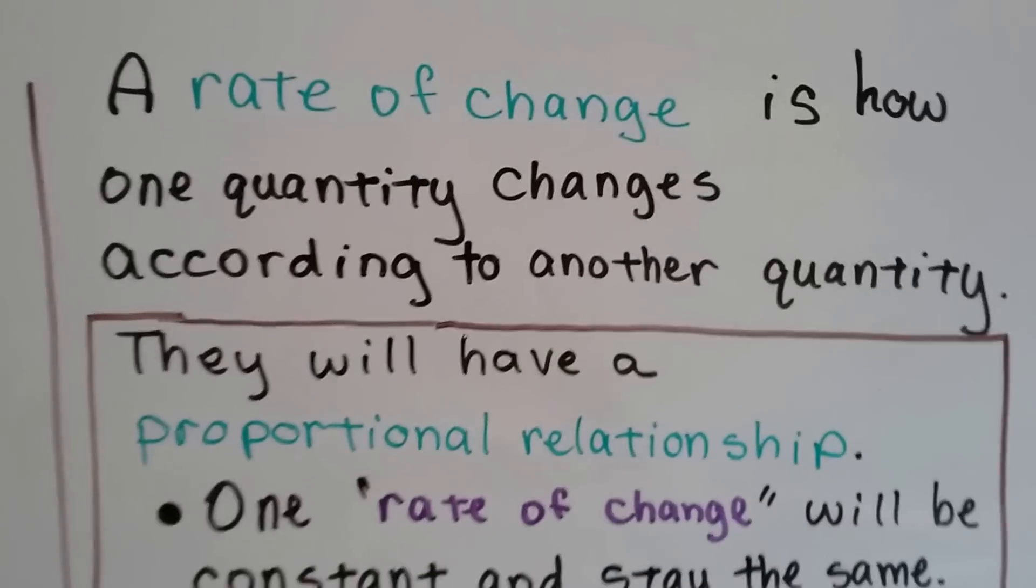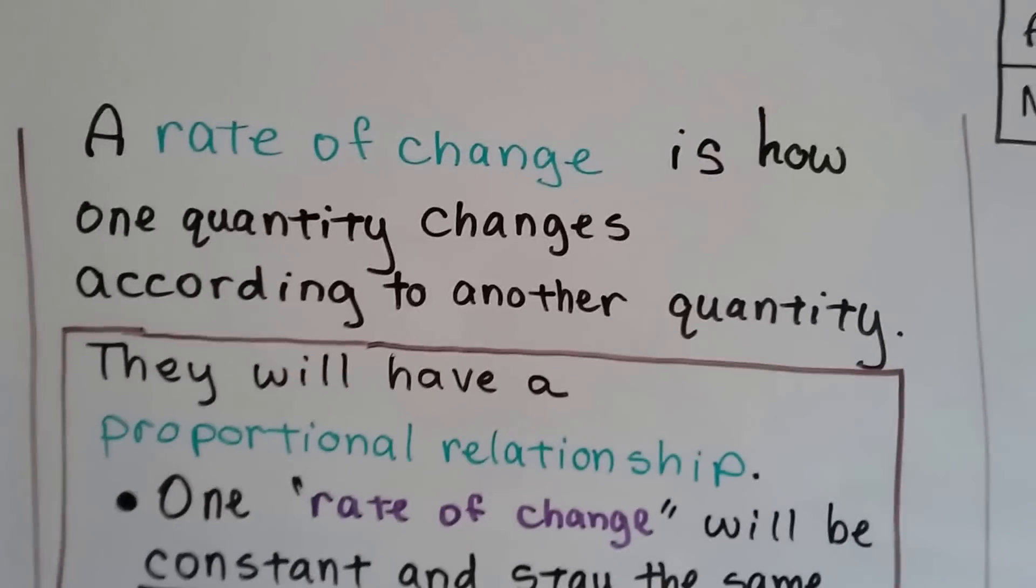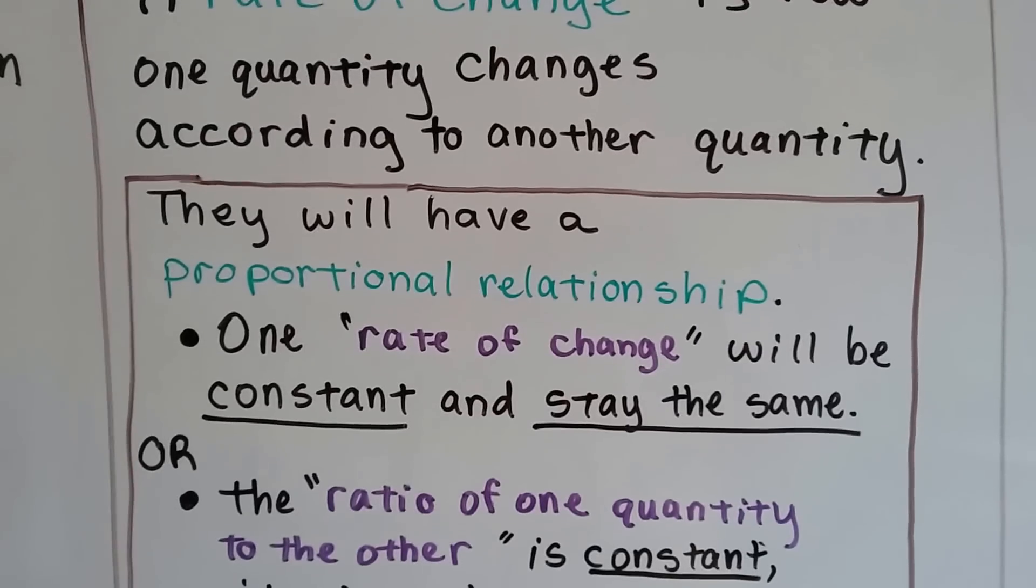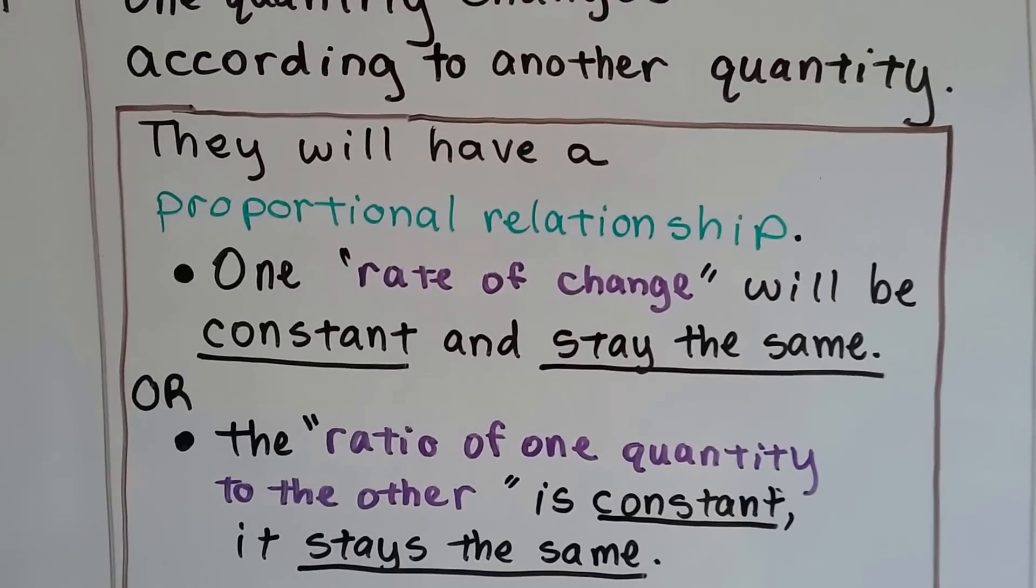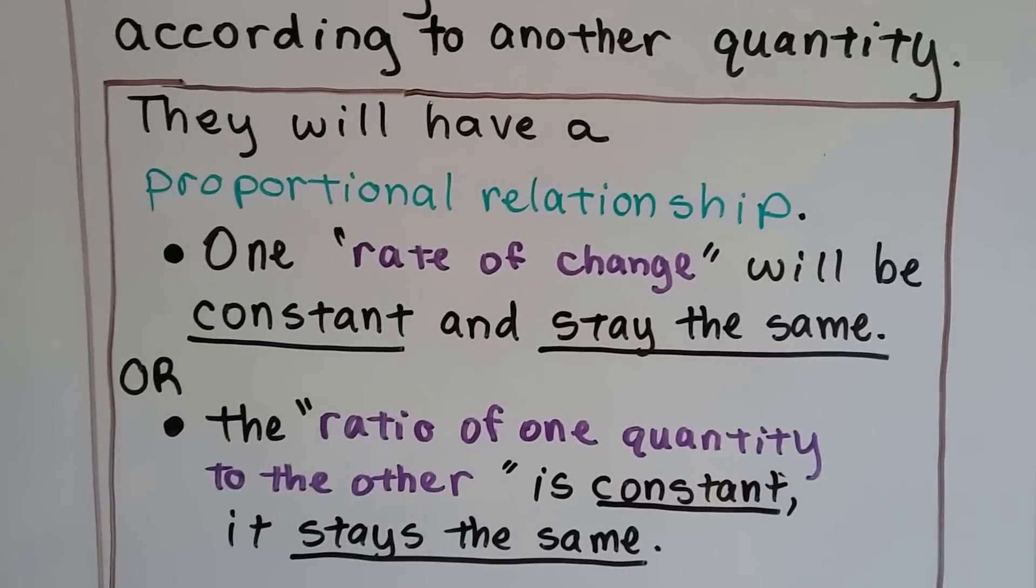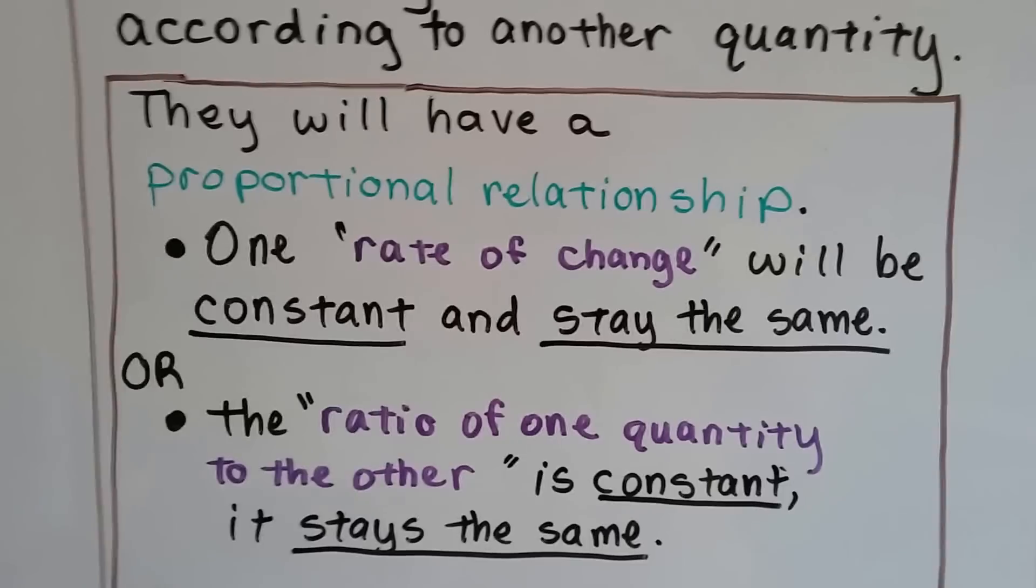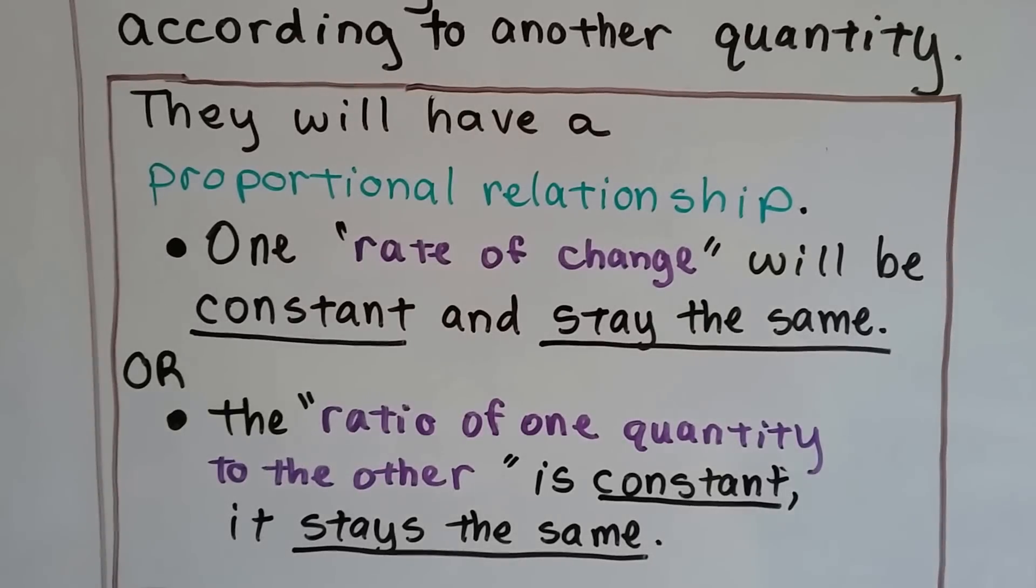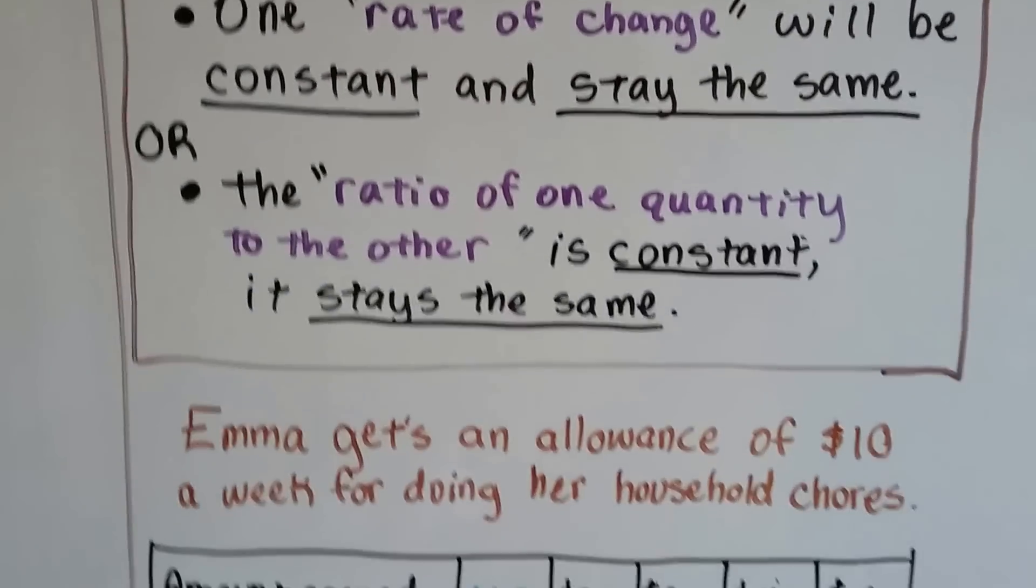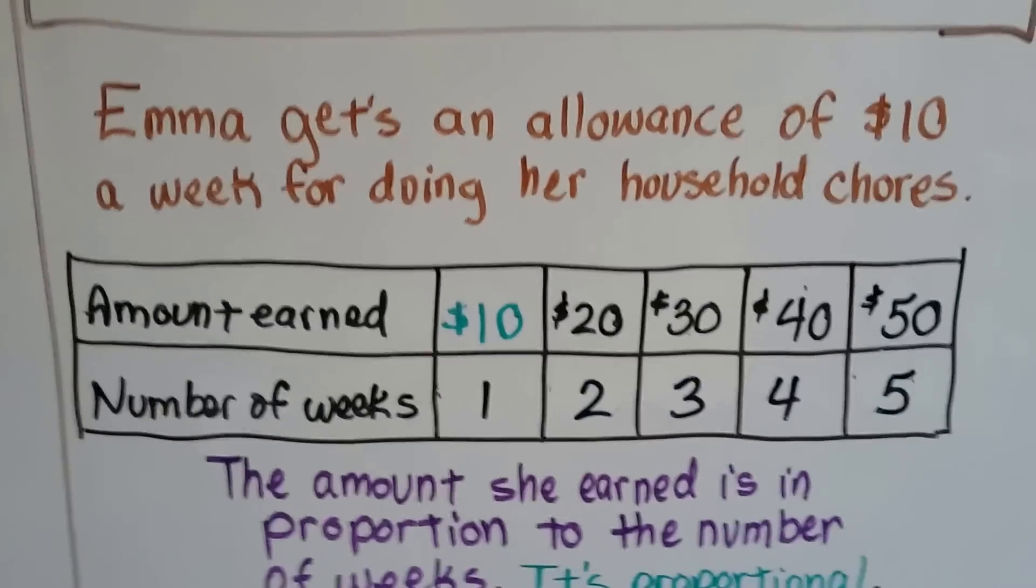A rate of change is how one quantity changes according to another quantity. When they're in proportion with each other, they have a proportional relationship. The rate of change will be constant - it stays the same. The ratio of one quantity to the other is constant.